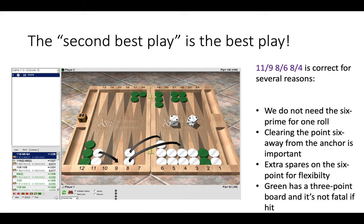Here the second best play is 11 to 9, 8 to 6, and 8 to 4. And you can see there on the left in the analysis that making the seven point is not even the top six moves.